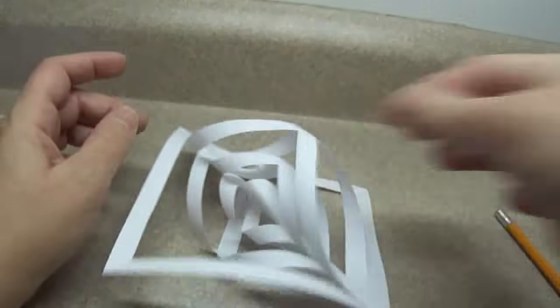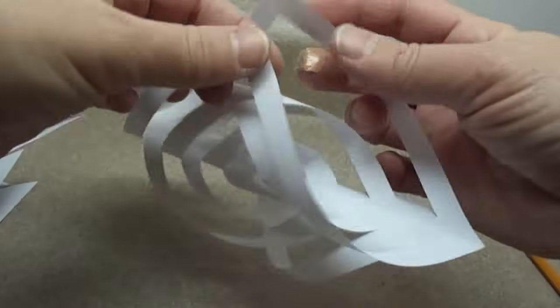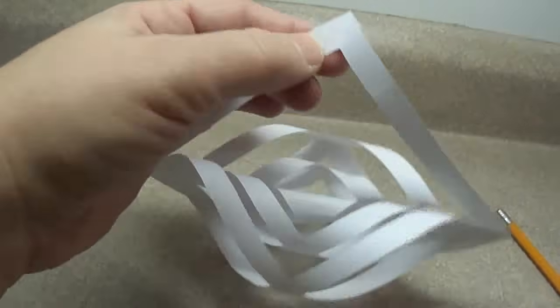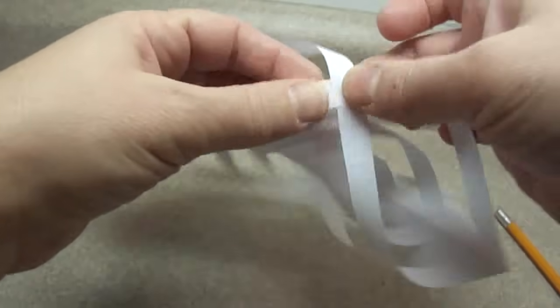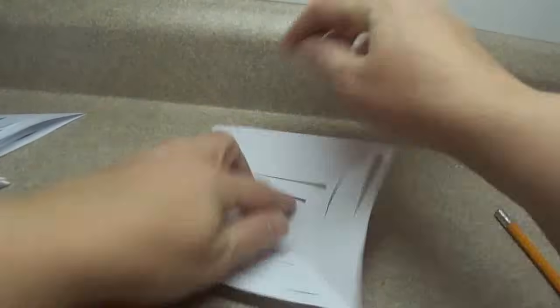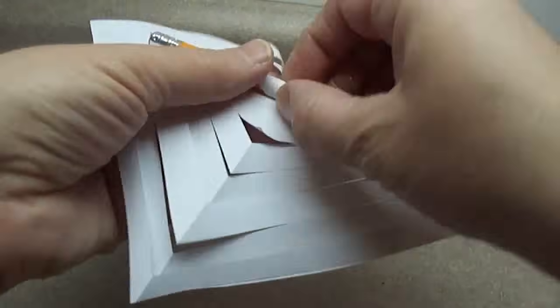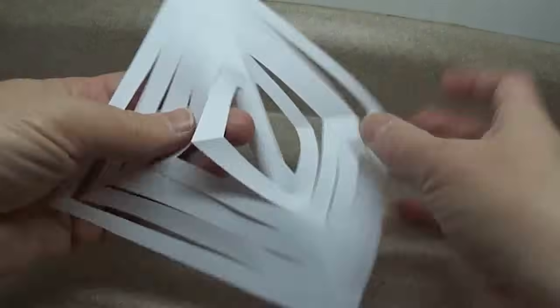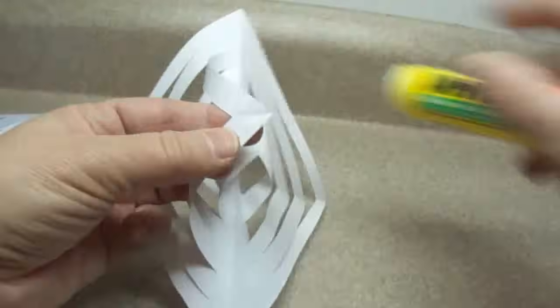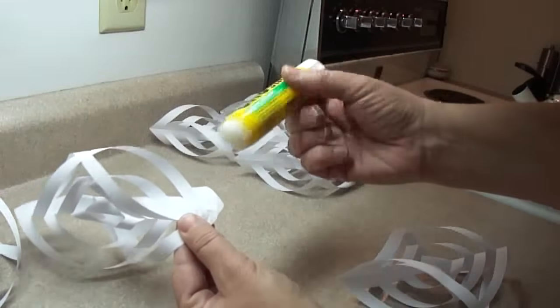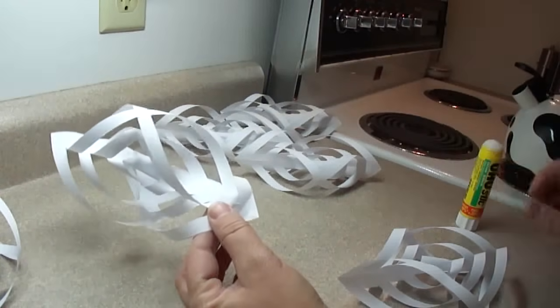And of course, the size of the square that you use will determine the size of your finished product. You can make these very tiny to decorate a tree with, or you can make them very large using very large squares to make a nice window decoration. So there's one, and you need to do that six more times. And of course, the kind of paper you use is completely up to you as well. You can use colored paper, silver, gold, pattern paper, whatever you like. So when you're done, you have six of those.